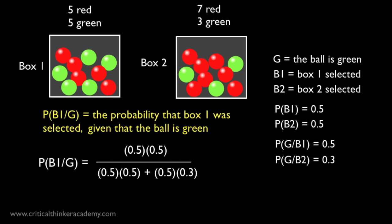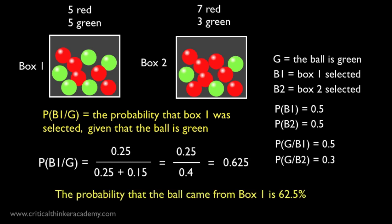You see now how the numbers are actually pretty easy to work with. When we evaluate the products and do the sums, we get the answer. The probability that the ball came from box 1 is 0.625 or 62.5 percent.